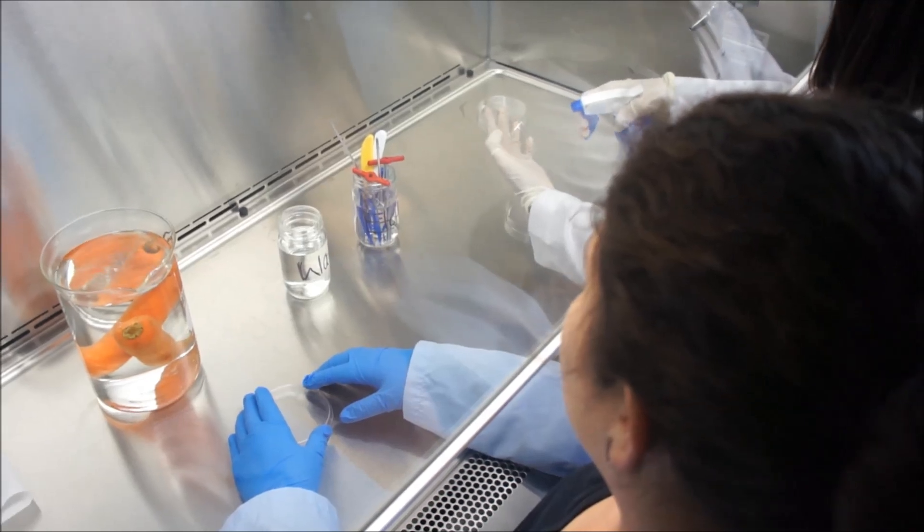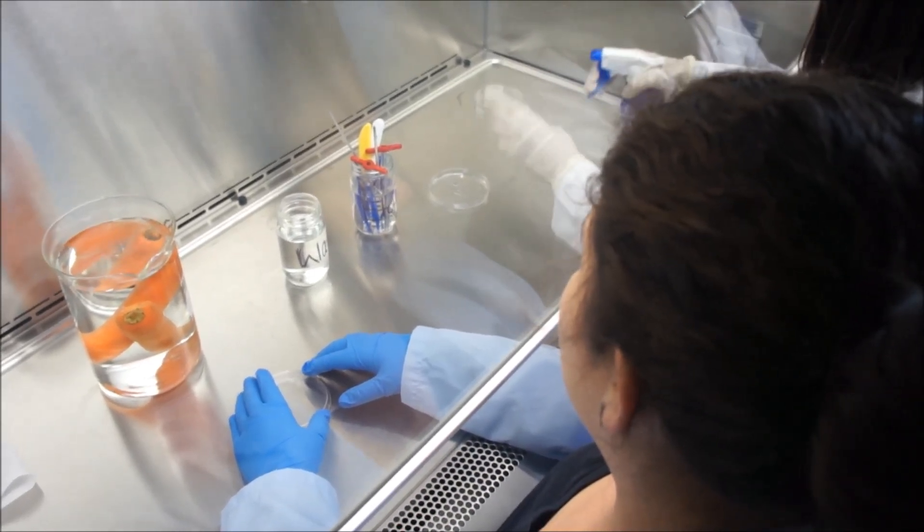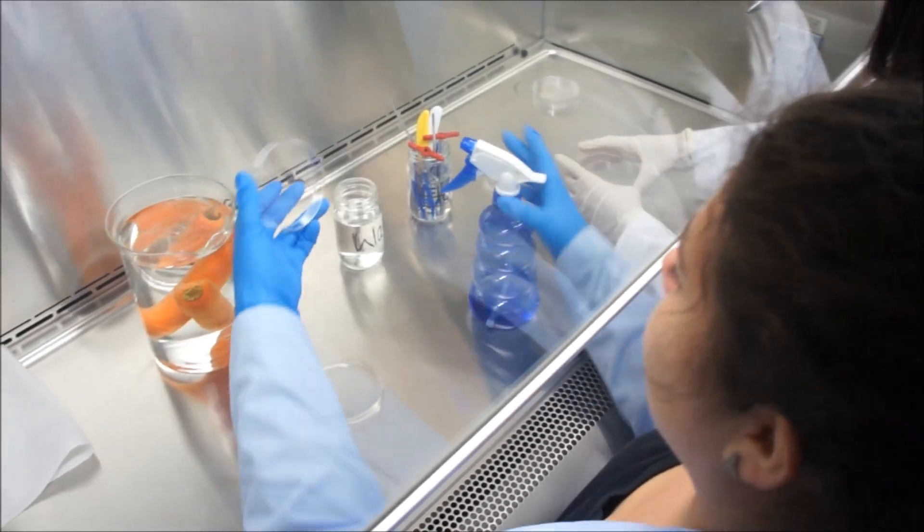Put the root large end down in a sterile pre-tiered dish into which a few drops of ethanol have been poured or sprayed.